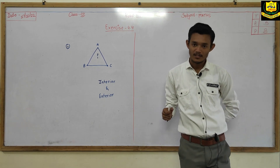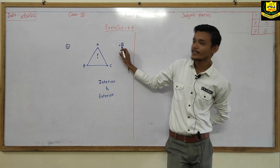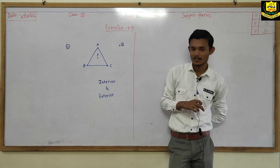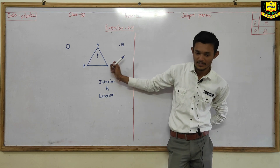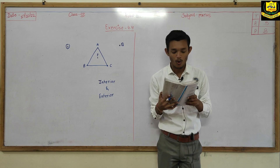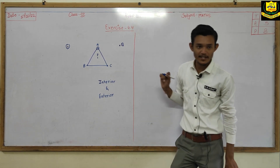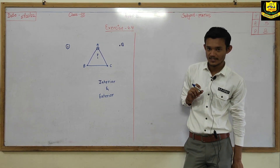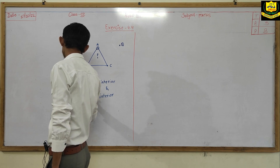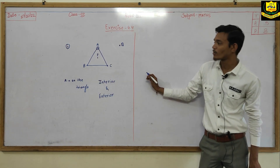Secondly, we have to put another point in the exterior of the triangle. So where will we put point Q? We put point Q outside the triangle, so we say point Q is in the exterior of triangle ABC. Thereafter, is point A in the exterior or interior? What can we say about point A? Point A is on the triangle — it is not interior or exterior. It is on the triangle.